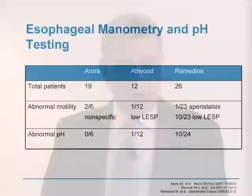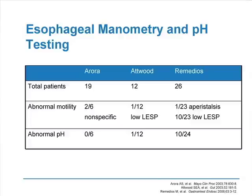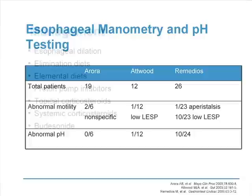Regarding esophageal manometry and pH testing, three studies with 19, 12, and 26 patients respectively show only a smattering of abnormal motility in small numbers of patients — 2 of 16, 1 of 12, 1 of 23 — and only minor pH abnormalities. There is no recommendation to obtain manometry or pH testing in patients with EOE unless you are conducting a clinical study or trying to prove a specific point.